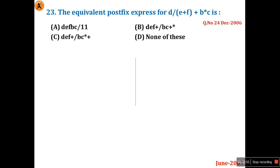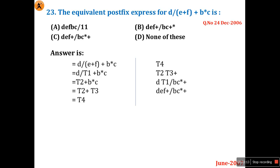Question 23 asks for the equivalent postfix expression for D divided by E plus F plus B multiplied by C. This is a repeated question — it appeared as question 22 in December 2006, where I explained it in detail. New visitors should watch those previous videos. The answer is option C.